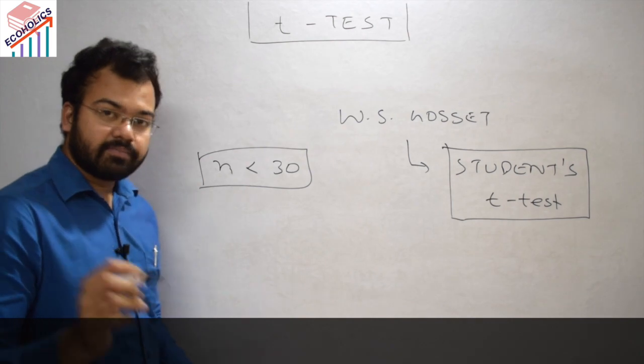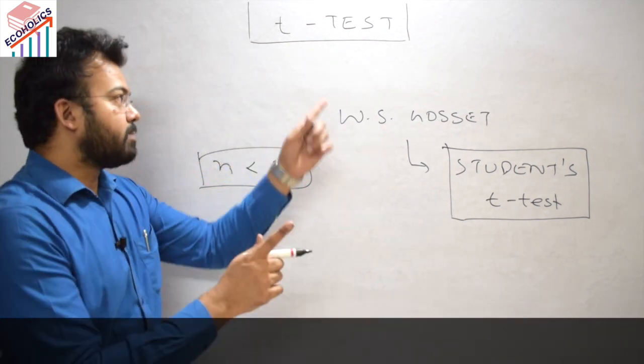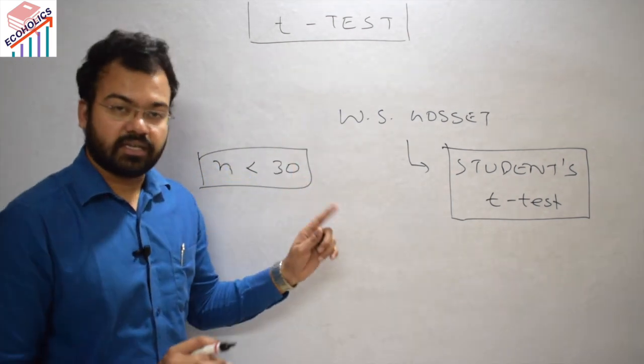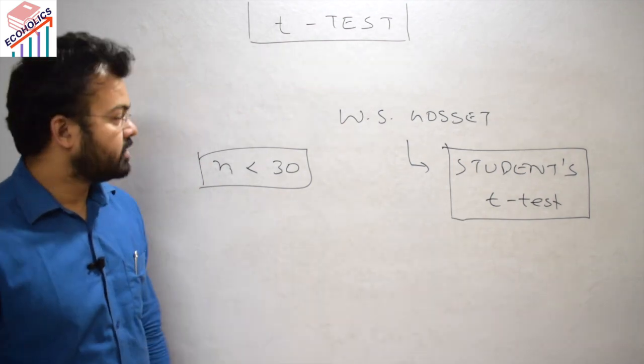Under this test, the sample size is always less than 30. If the sample size is less than 30, then only you can apply this t-test — that's the first thumb rule.